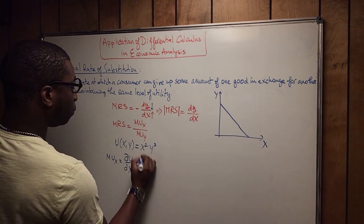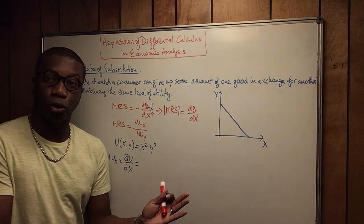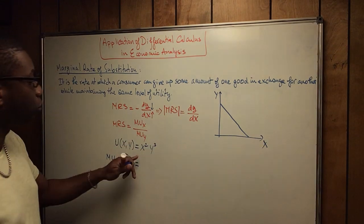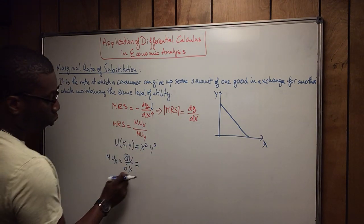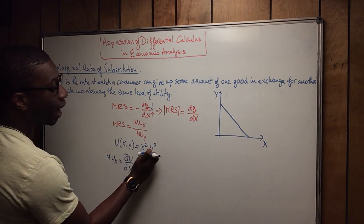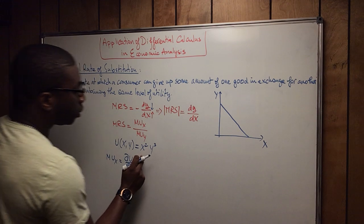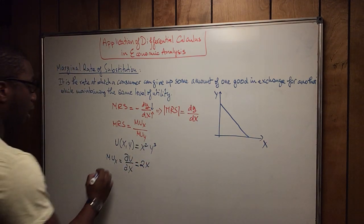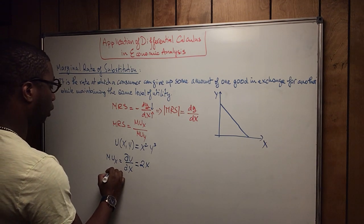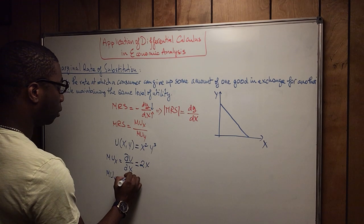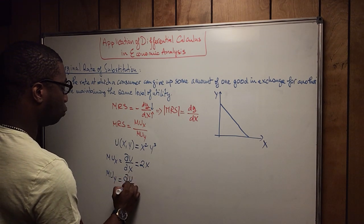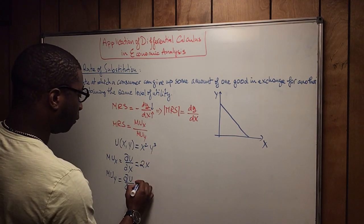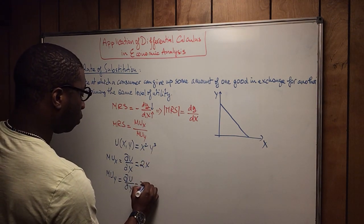Applying the partial derivative and the power rule: since we're taking the derivative with respect to X, we treat Y as a constant. The derivative of X squared is 2X. Now we calculate the marginal utility of Y, which is the partial derivative of U with respect to Y. Applying the power rule gives us 3Y squared.